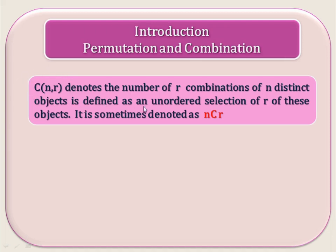C(n, r) is also defined as the unordered selection of r of these objects. Here there is no arrangement — it is the unordered selection. It is sometimes also denoted as nCr. So C(n, r) is one notation and nCr is another notation.